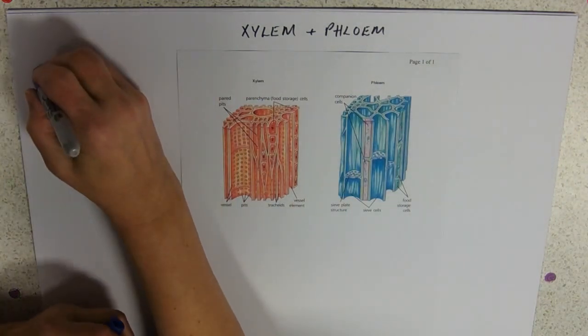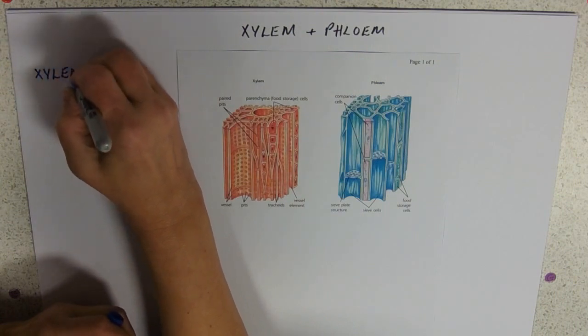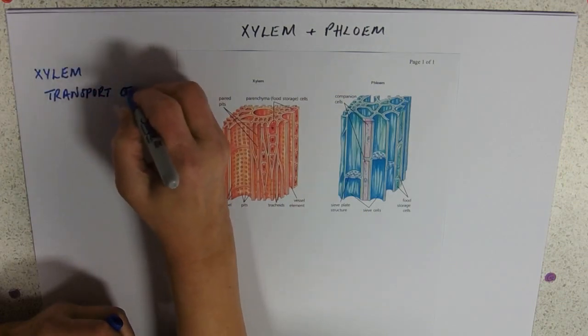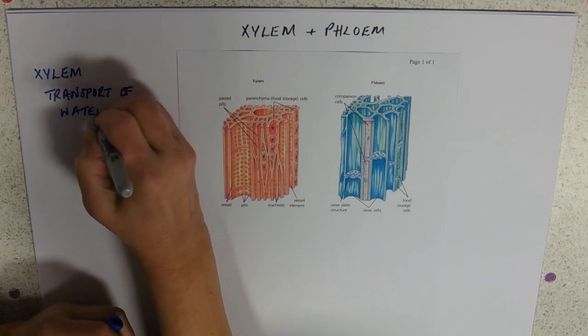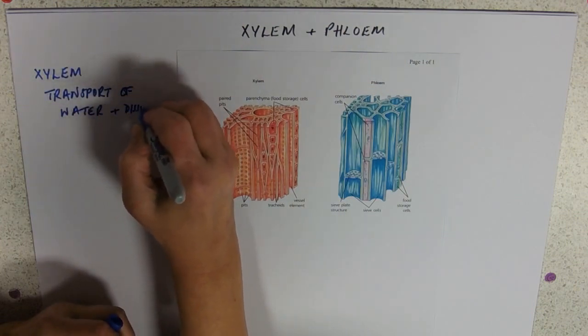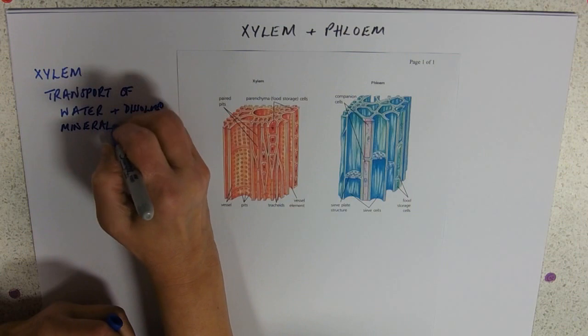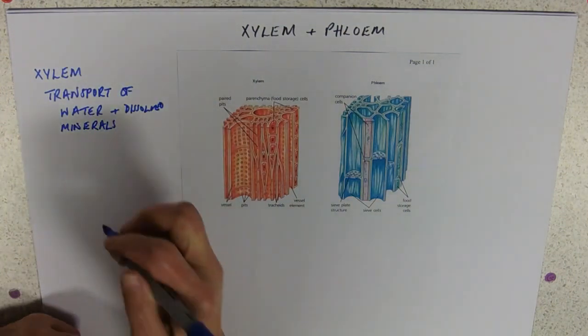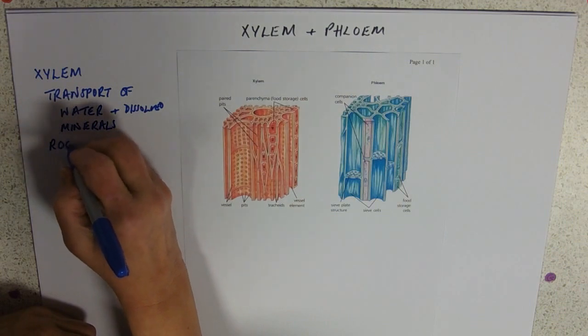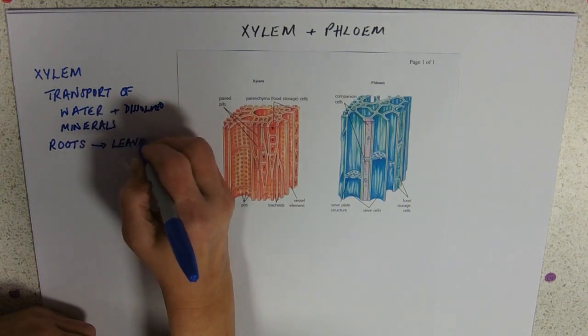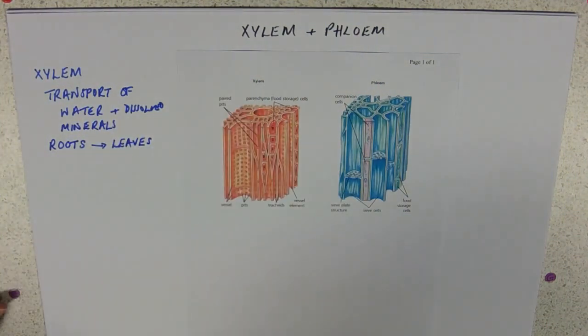So, what do we all know about xylem? The thing that we know about xylem is that it is involved in the transport of water and dissolved minerals. And I think it's important at this point to point out that this is always going in one direction, roots to leaves. And there will be a video on cohesion tension theory. It never goes backwards, just keeps going forwards, roots to leaves.